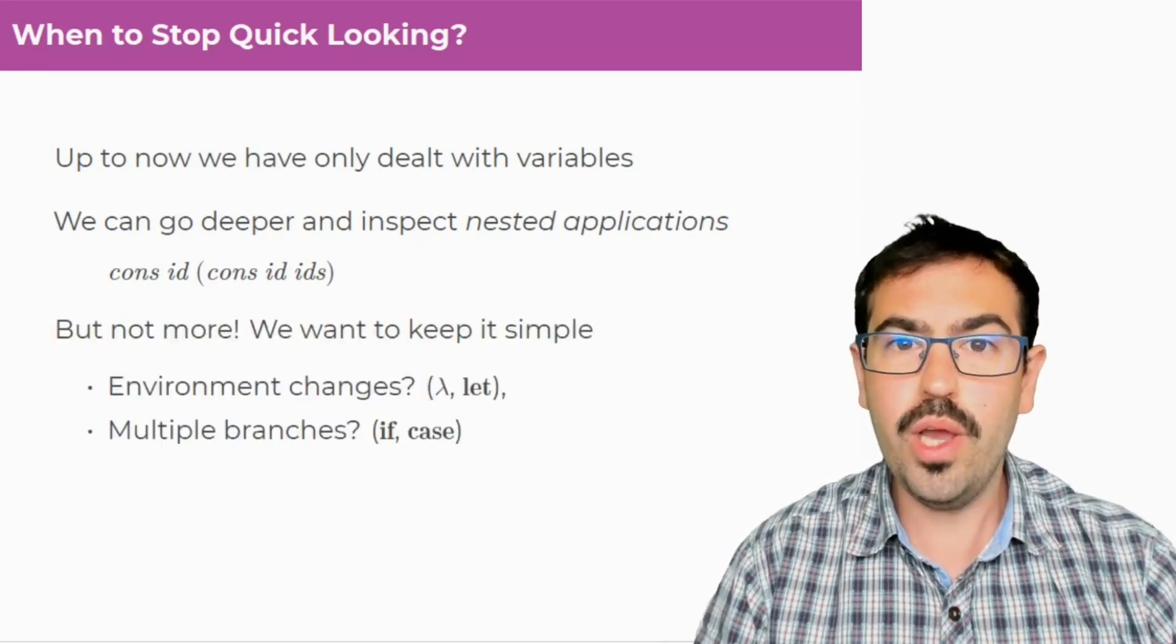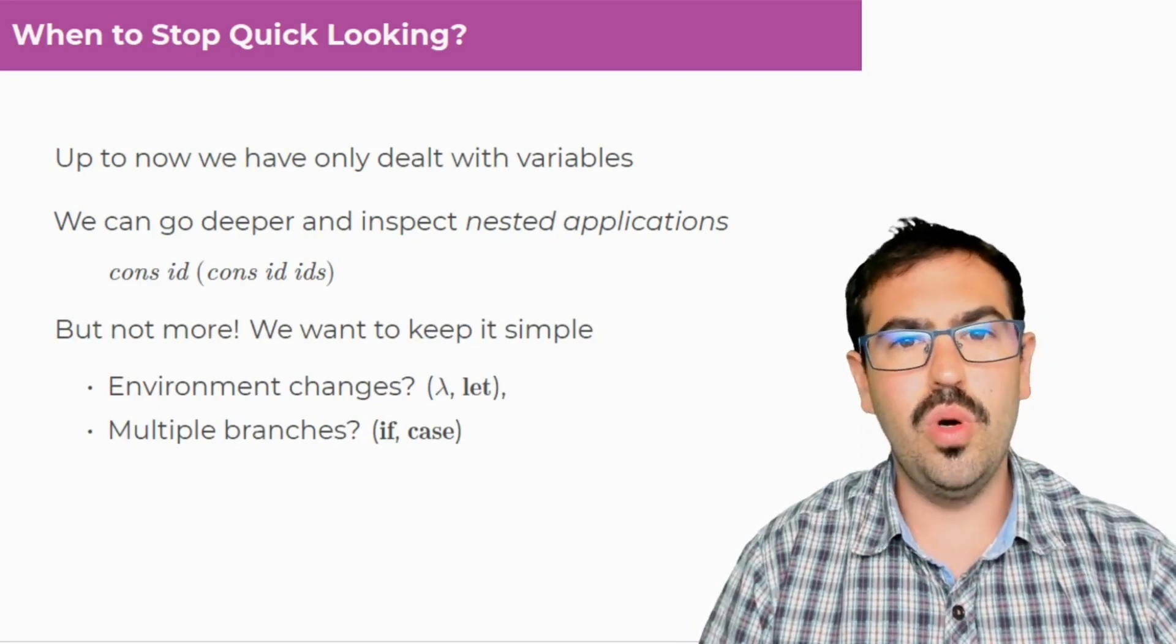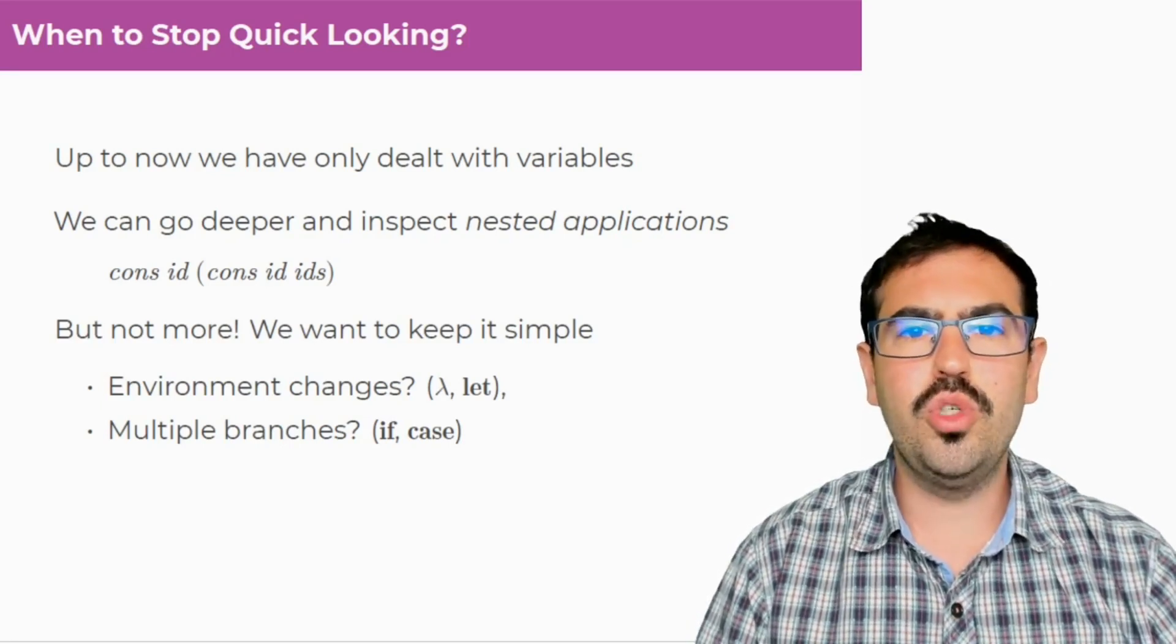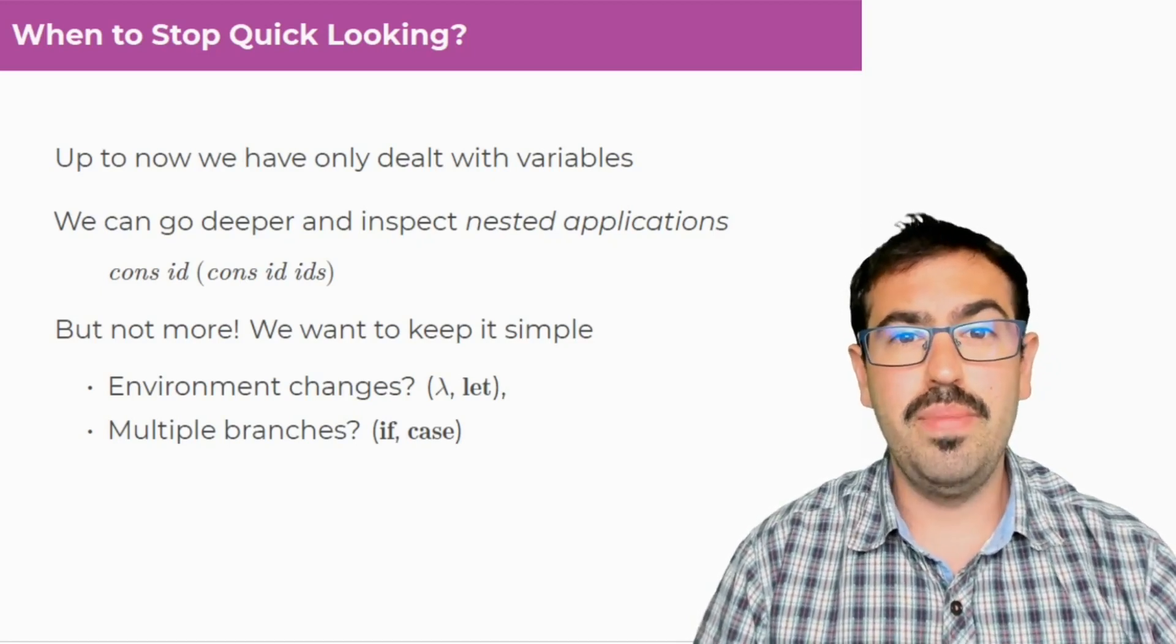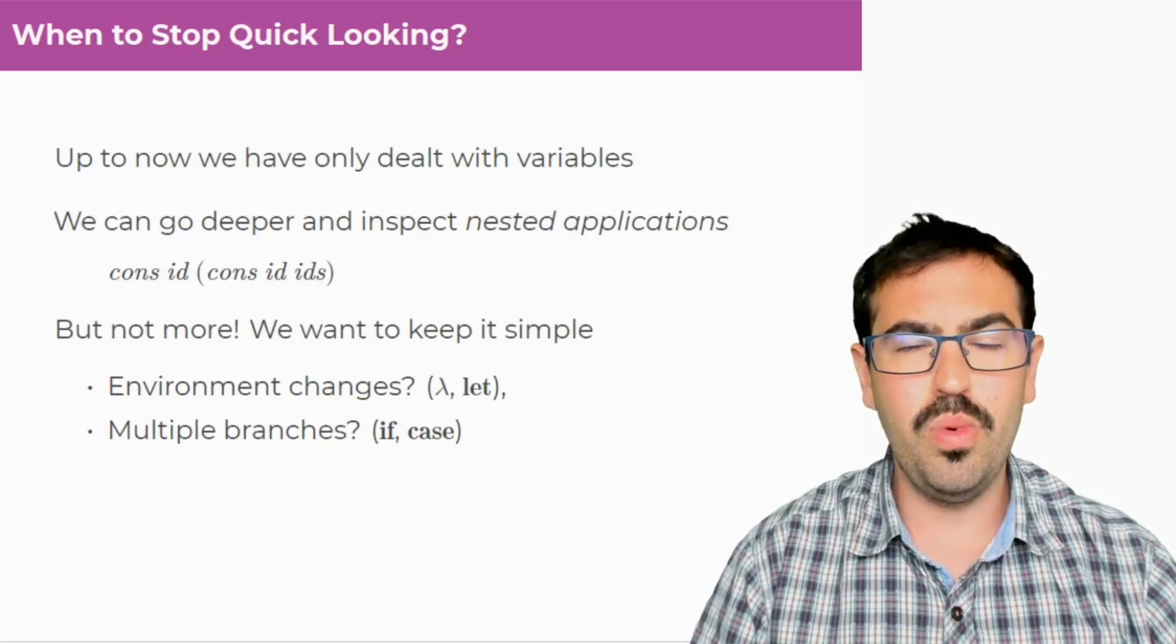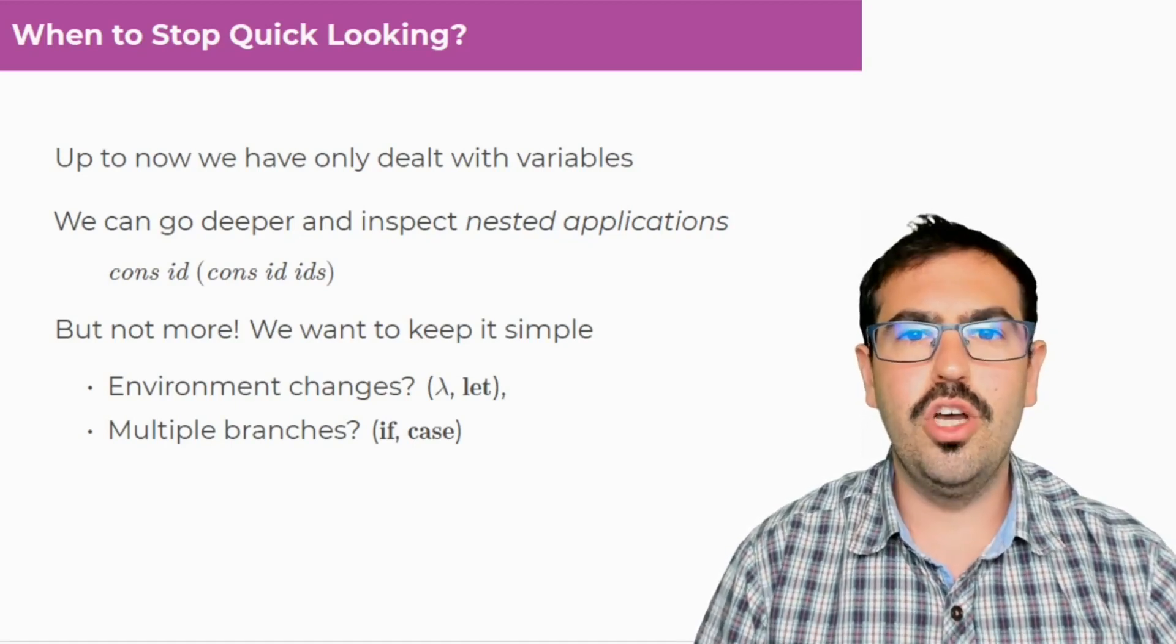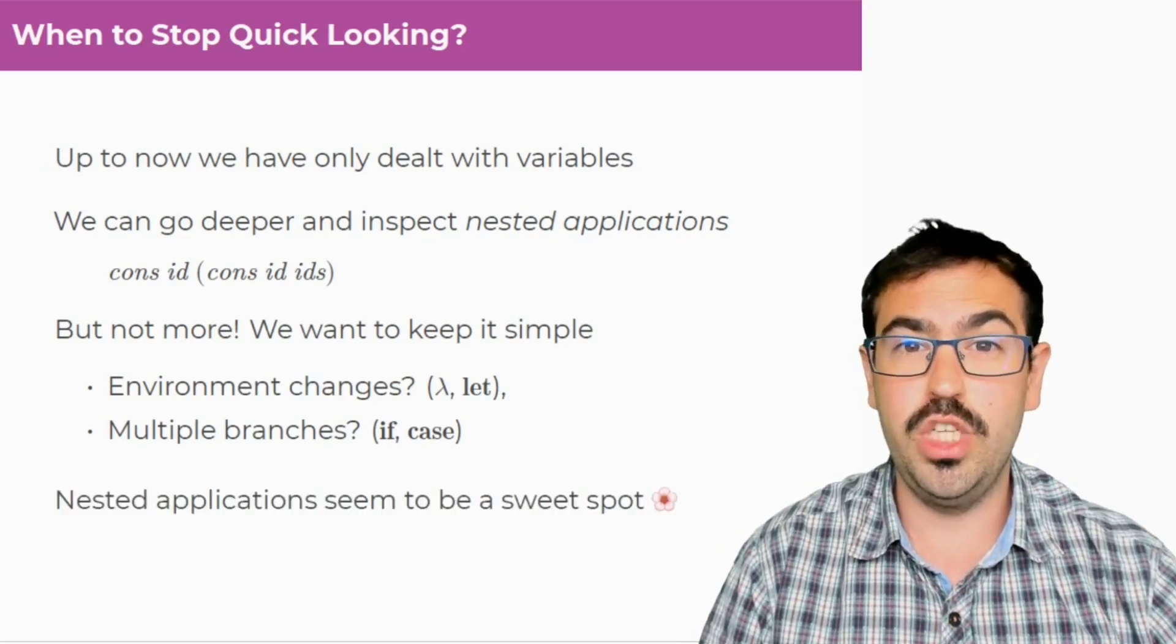But we do no more, we really want to keep this simple. We don't want to go into environmental changes. So we don't inspect lambdas, we don't inspect lets, because this introduces new things into the environments. And we don't try to inspect things with multiple branches, like ifs or pattern matching, because this will imply that we need to not only unify things in a simple way, we would also need to consider the casing where these two branches don't have a similar type.